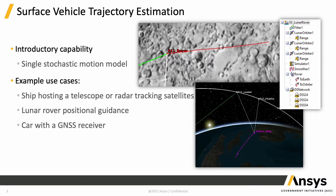The first feature I want to touch on in depth is surface vehicle trajectory estimation. We're introducing a simple stochastic motion model to model the motion of a lunar vehicle, or any vehicle on any surface. Whether it's a lunar vehicle or a ship, anything moving across the surface of a body can have its motion estimated and included in the filter using this new estimation technique.